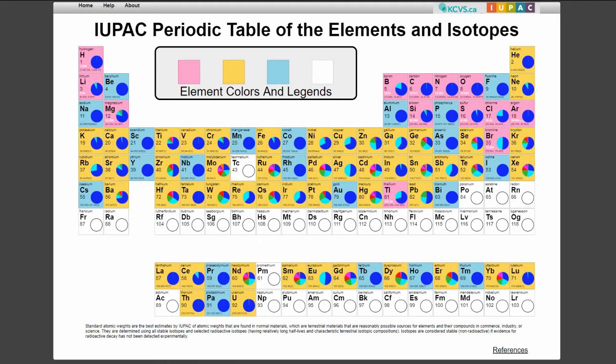You may have noticed that the grouping of elements by color does not match the way elements are grouped on traditional periodic tables. Instead, they are grouped based on the variability of their isotopic abundances and the method used to determine their standard atomic weight. The element colors and legends at the top of the page contains descriptions of what the colors mean, as well as a guide to all the information on each tile.